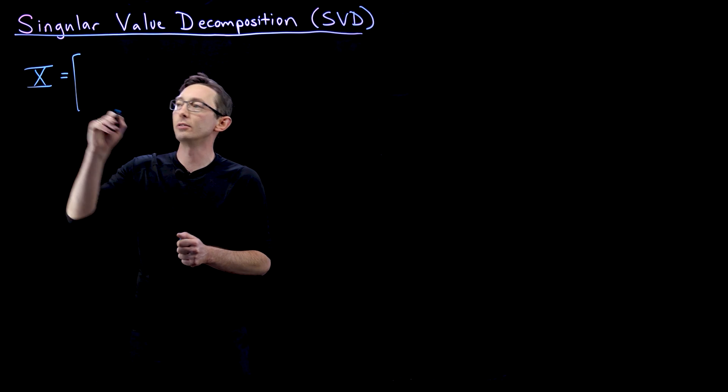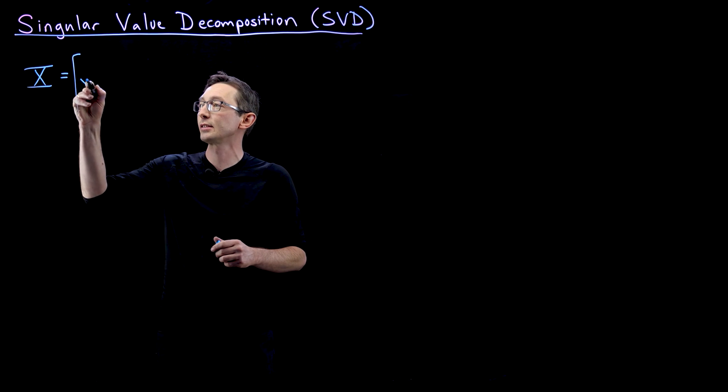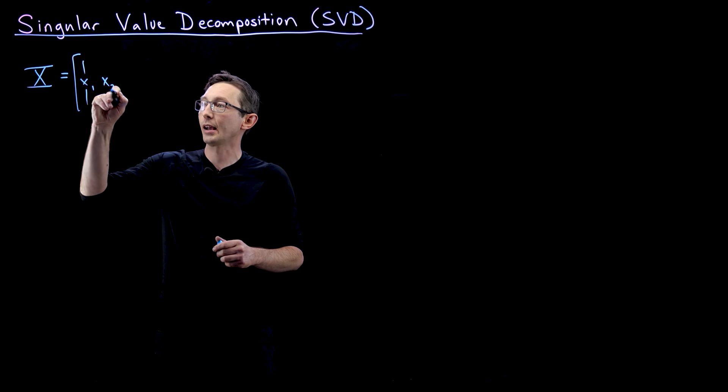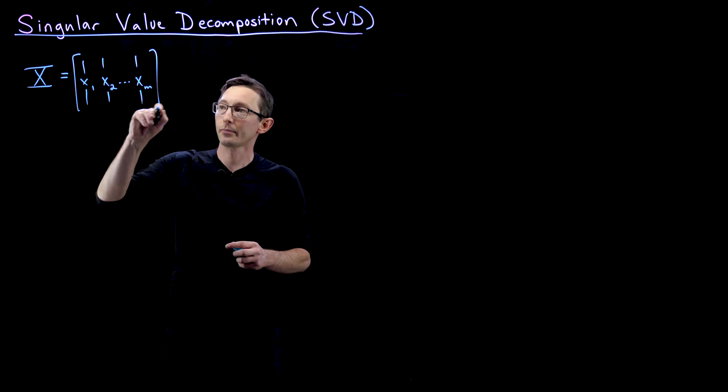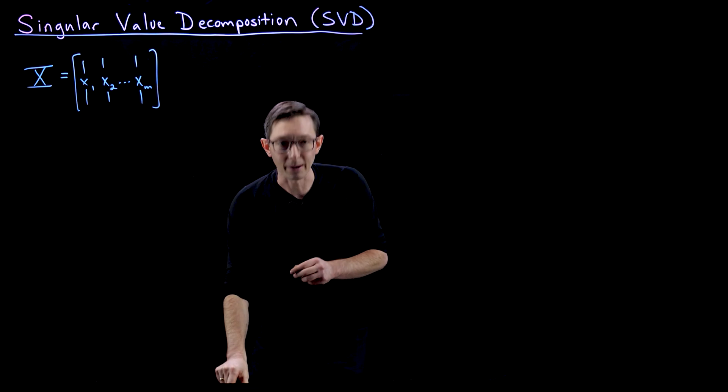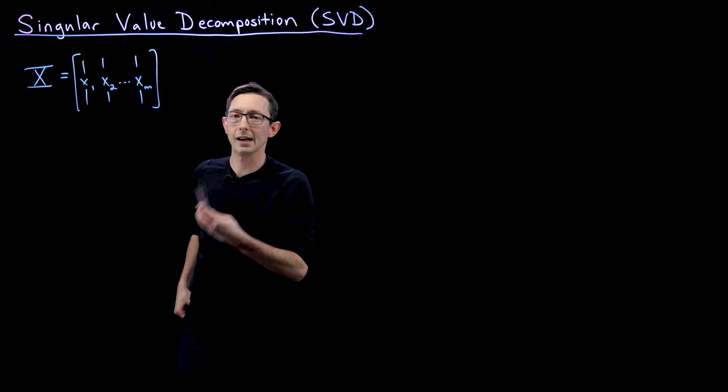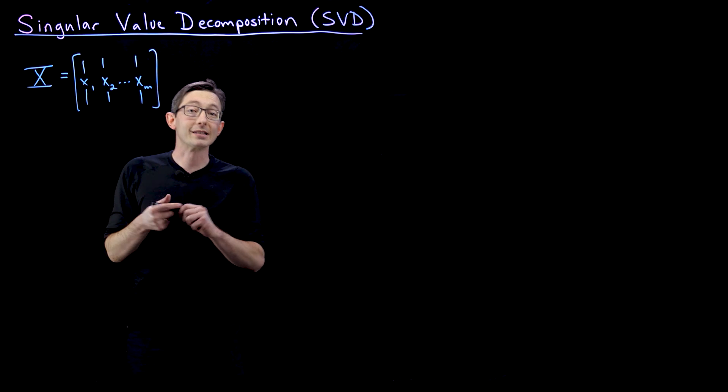So we're going to define X as a collection of column vectors, X1, X2, so on and so forth up to Xm. And so the way I think about this, I'm going to give you a couple of examples of where this matrix X could come from.